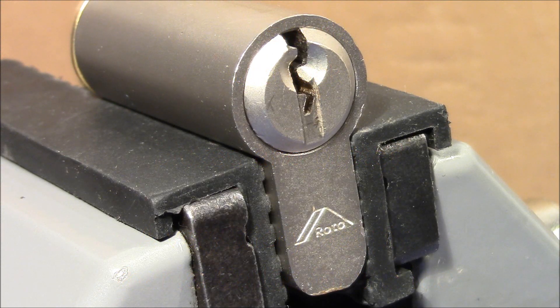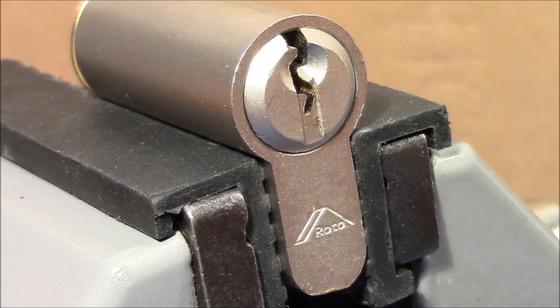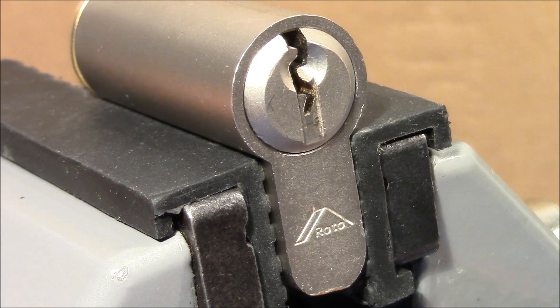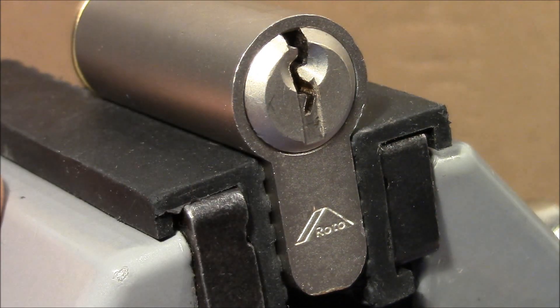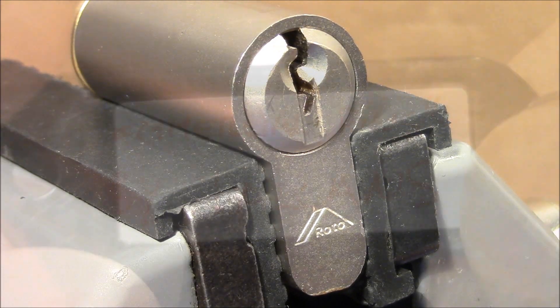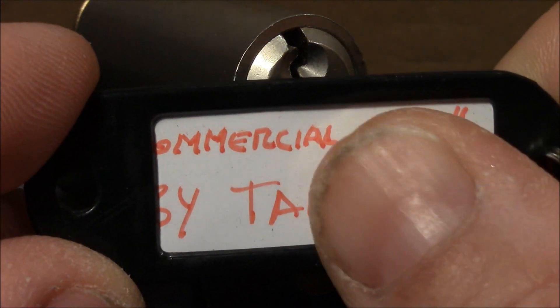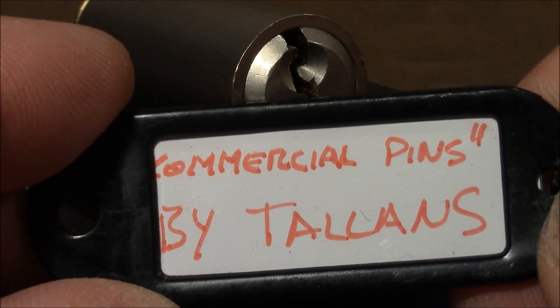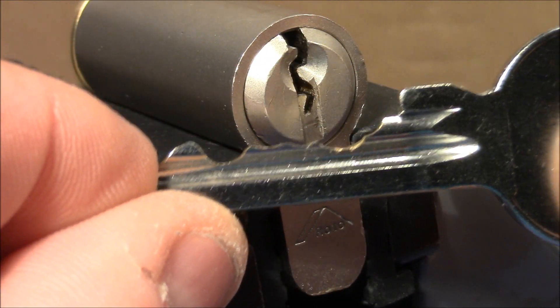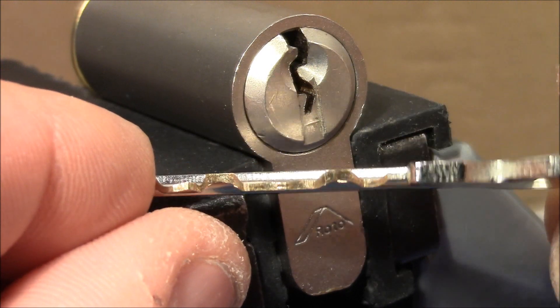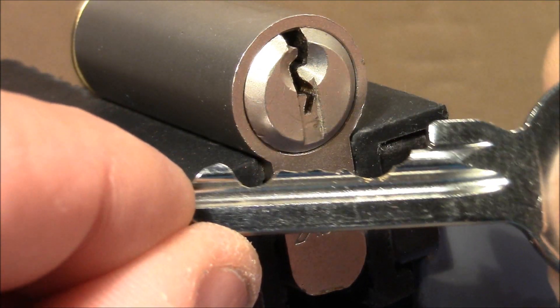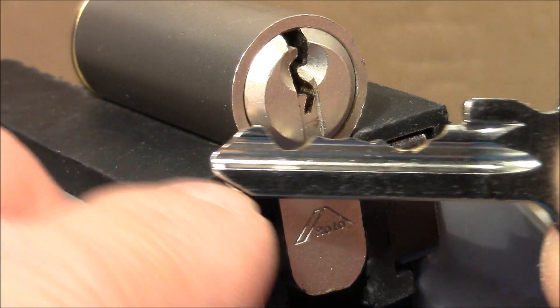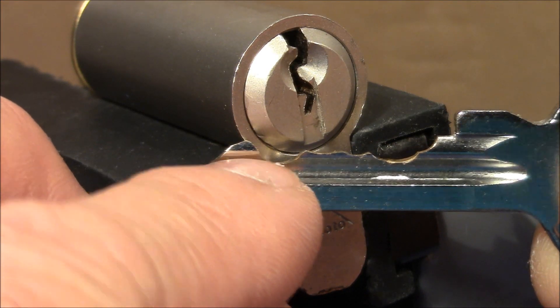Welcome to a half euro cylinder that Talon Pick sent to me. It's a Roto lock, never heard of this brand before, probably Spanish. The label on the key says commercial pin in quotes by Talon. That's the bidding on the key. Pretty wild bidding and you can immediately see what the trick of this lock is, it's pin number five.